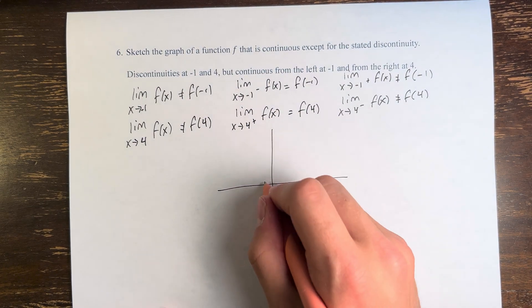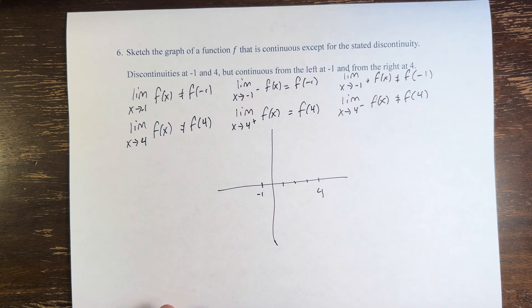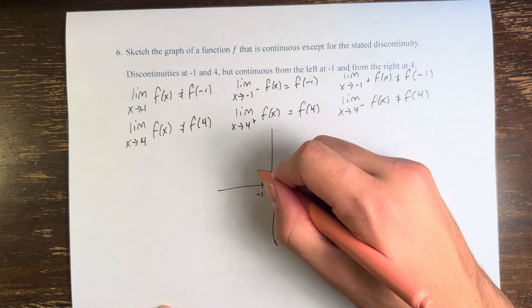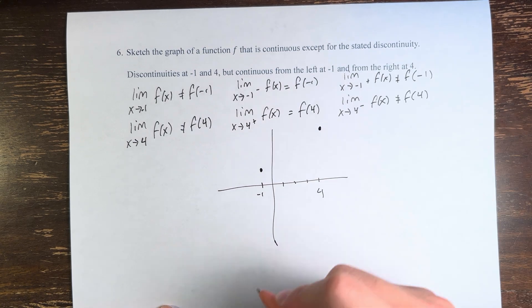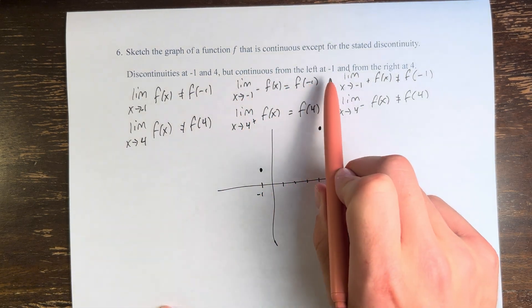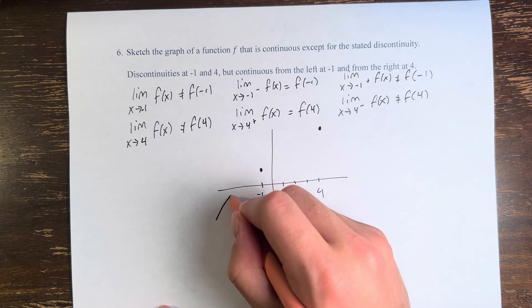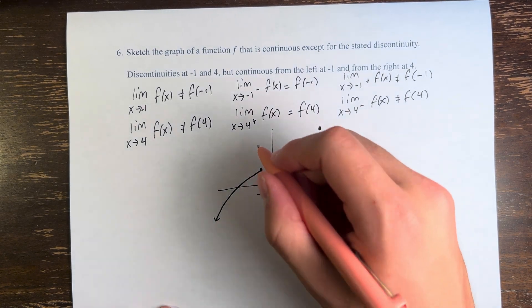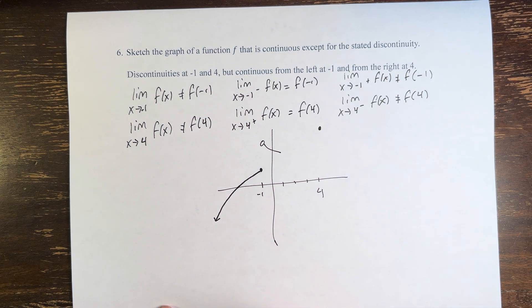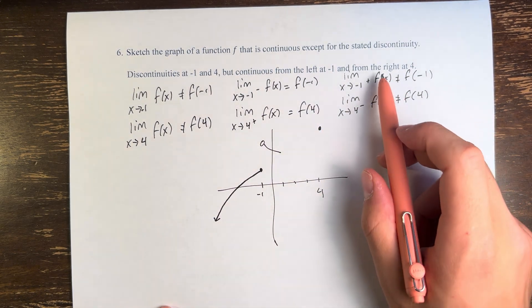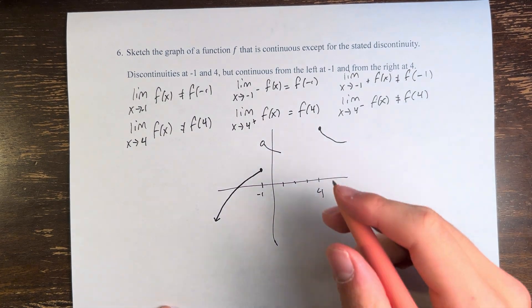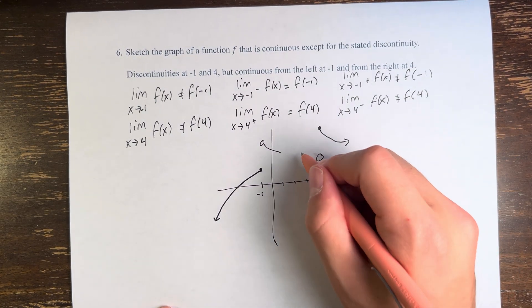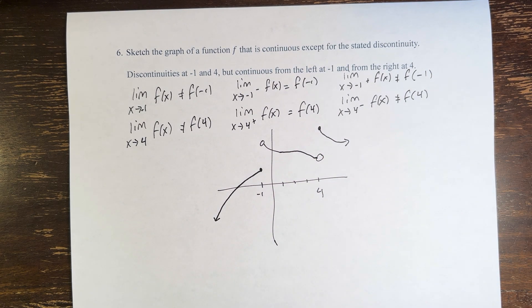So we have to sketch this function, with points at negative 1 and 4. If the function has this value at negative 1 and this value at 4, we're saying it's continuous from the left at negative 1 — as we approach the value at negative 1, the function approaches the value of the function. However, from the right, it approaches some different value. At 4, it's continuous from the right, so as we come from the right it approaches the function value, but from the left it approaches a different value. Connecting our function so that it's continuous on all other intervals, we can see that this is the graph of the function f with the particular discontinuity.